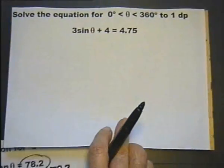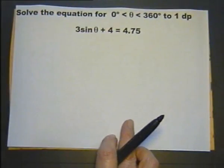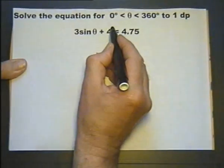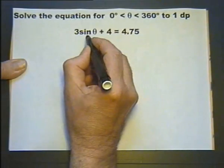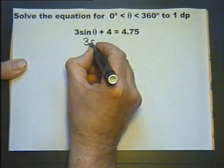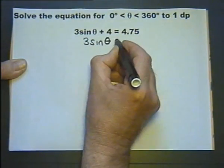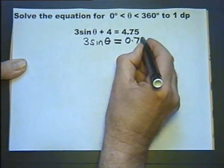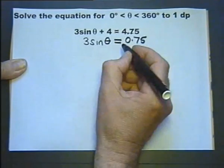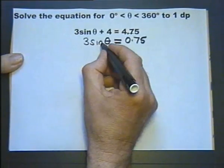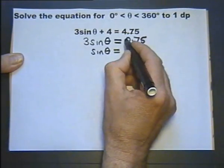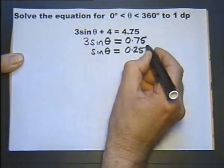Right, now we've got something looking a bit more like an equation, and we approach it in the way we normally approach equations. Let's subtract 4 from both sides. So if we subtract 4 from that side, that's what we get. If we subtract 4 from that side, that's what we get. Now let's divide both sides by 3. If I divide the left hand side by 3, that's what I get. If I divide the right hand side by 3, that's what I get.